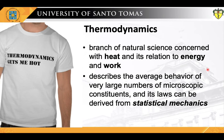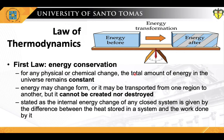Let us try to simplify this concept and just jump straight into its biochemical applications. We will just discuss the first two laws of thermodynamics. There are four laws, but it is only the first two that mostly pertain to biological systems. The first of these laws is the principle of the conservation of energy. This law states that for any physical or chemical change, the total amount of energy in the universe remains constant. Energy may change form or it may be transported from one region to another, but it cannot be created nor destroyed.